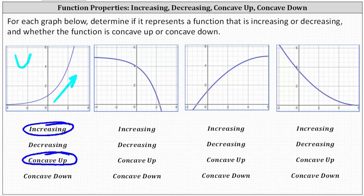Looking at the second graph, from left to right the graph is going downhill, which indicates the function is decreasing. The shape of the graph is in the shape of the right side of a downward-facing cup, indicating the function is concave down.